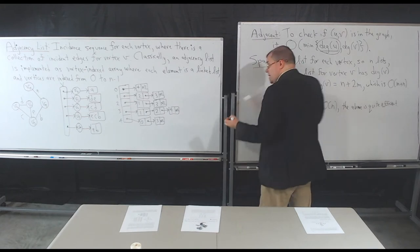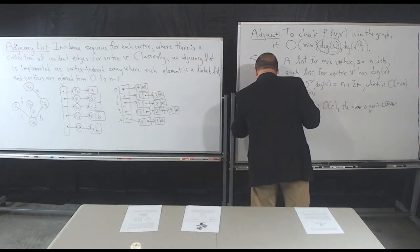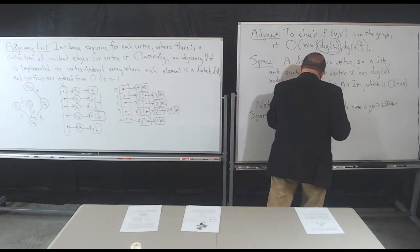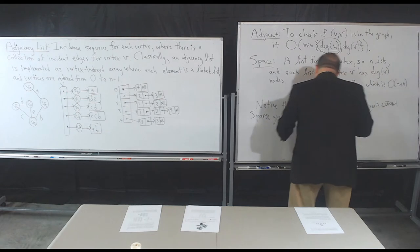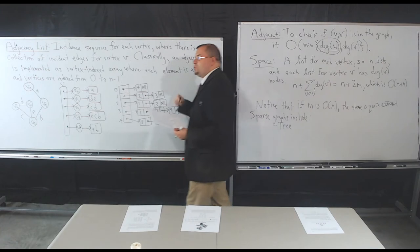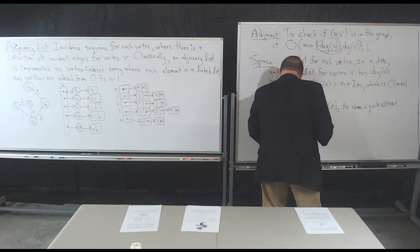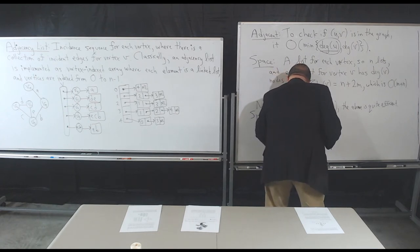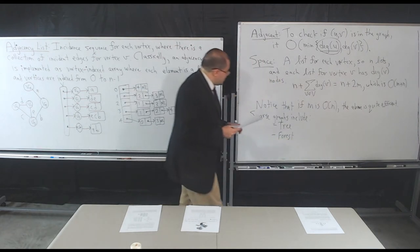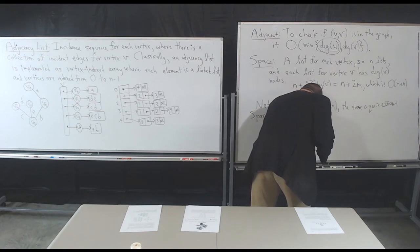What kinds of graphs are sparse? Sparse graphs include trees — we proved that M equals N minus 1, which is definitely O(N). Forests definitely fall into this category too. Another class is planar graphs.